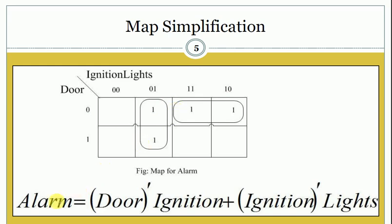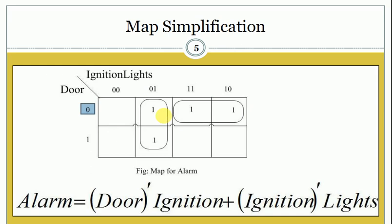So we can write the equation: alarm is equal to door prime · ignition plus ignition prime · lights. Since the value of ignition is not changing in one group we select ignition, and since the value of door is not changing in the other group we select door prime. So the final equation is alarm = door prime · ignition + ignition prime · lights.